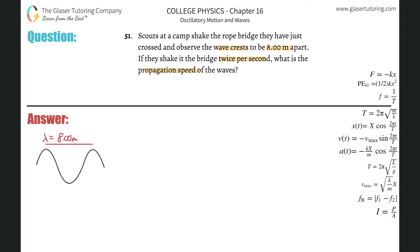Alright, so please memorize this formula: the speed of a wave, also known as the propagation speed, will be equal to the wavelength of the wave multiplied by the frequency.